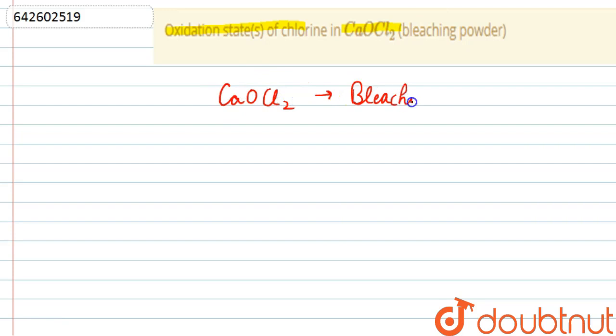We have to find the oxidation states of chlorine here. Now this compound exists as Ca(OCl)Cl.